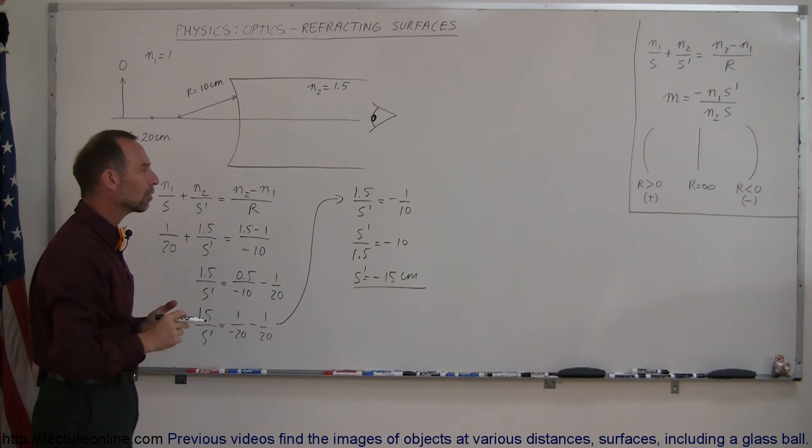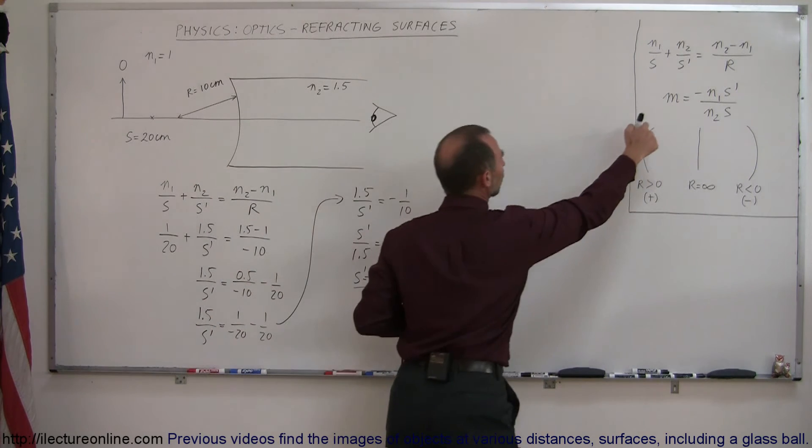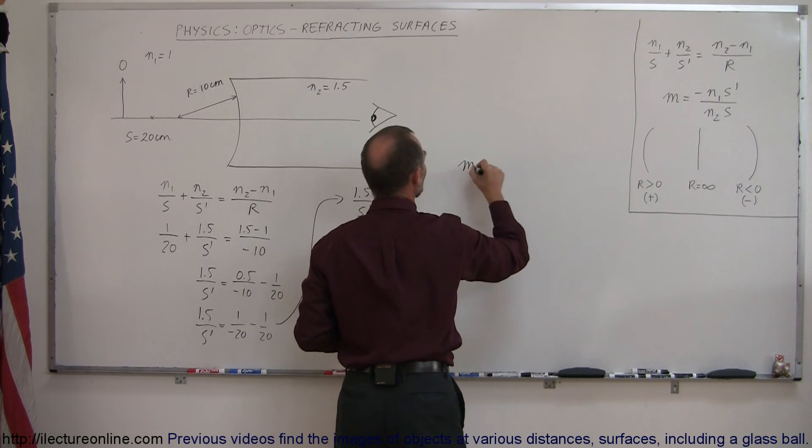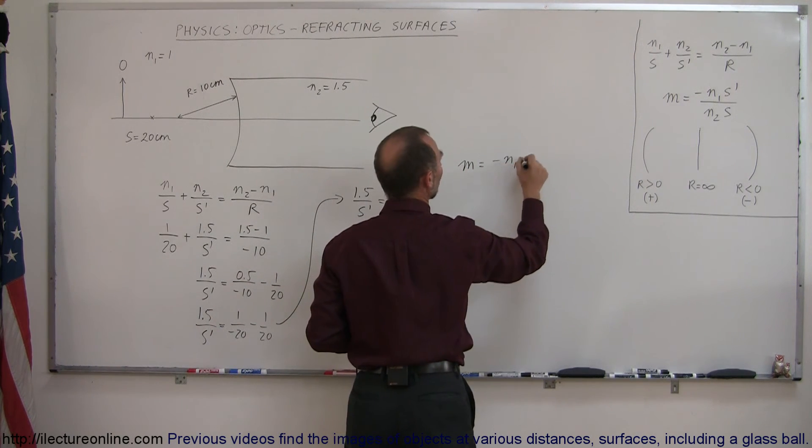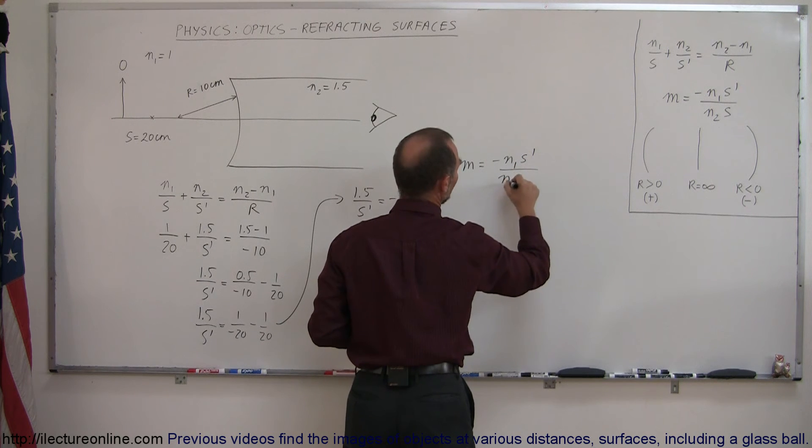And now we want to know how big the image is. Well, we use the magnification equation right here. So the magnification of the image is equal to minus N1 S prime over N2 S.